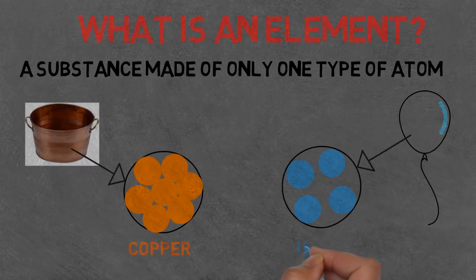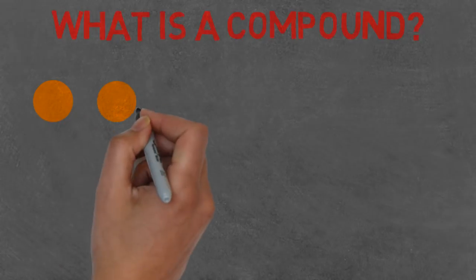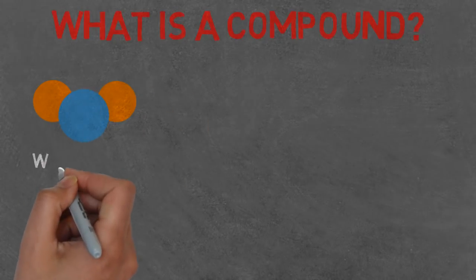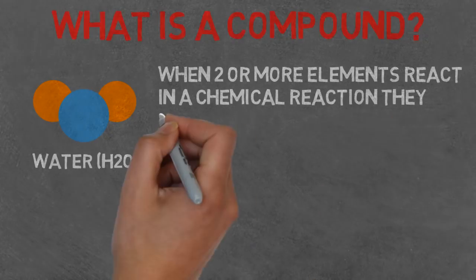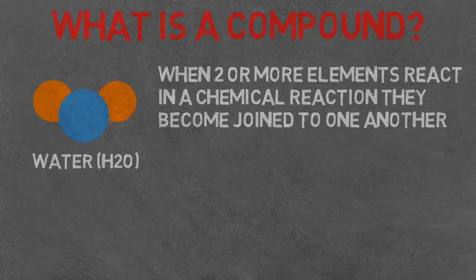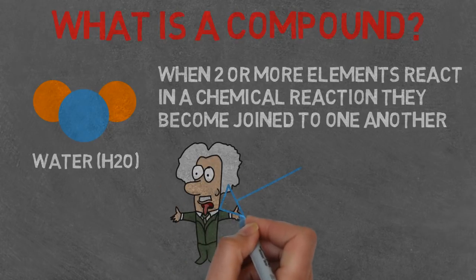When two or more elements react in a chemical reaction, they become joined to one another forming a compound. An example of this is water. You've got two hydrogen atoms and one oxygen atom, and they are joined together to form water. You're also a compound. You contain elements such as carbon, hydrogen, oxygen, and a few others, and when combined together they make up you.